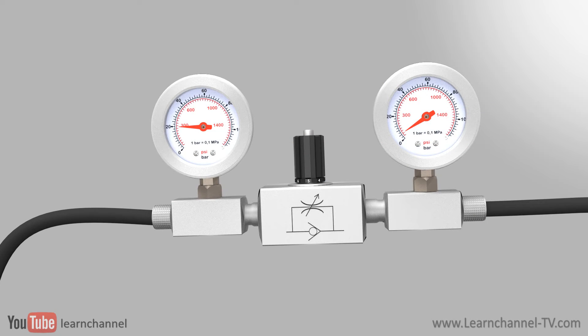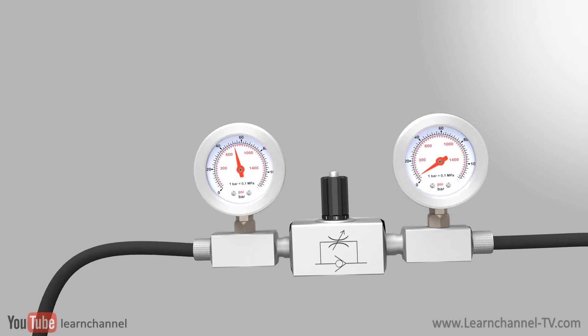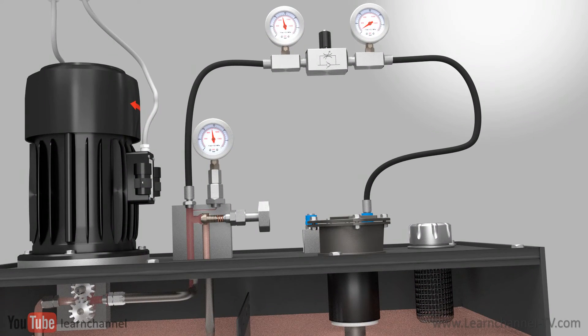What happens to the volume flow when the flow control valve is closed? After all, our pump delivers approximately the same volume flow because the gears rotate with near continuous speed. Closing the flow control valve leads to added resistance to the hydraulic circuit and therefore increases the pressure.